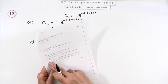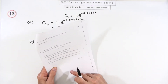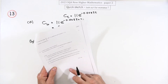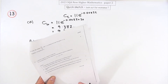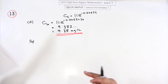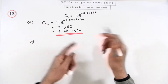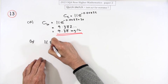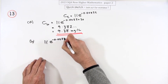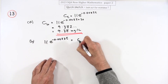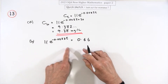Now in Part B, it says the dose becomes ineffective when it drops to 0.66 — how long would that take? It just says calculate the time. So this time we know the answer; we write it the other way around: 11e to the negative 0.0053t equals 0.66, and we need to find t.